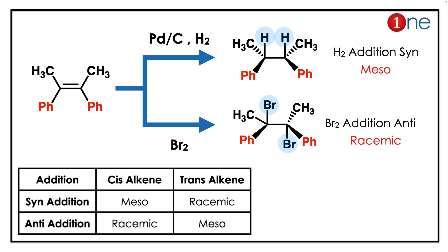Palladium-hydrogen addition is syn-addition; bromine addition is anti-addition. So according to our table, cis-stilbene with syn-addition (Pd/H₂) leads to meso, and cis-stilbene with bromine (anti-addition) leads to racemic. The reactant stereochemistry combined with the reagent's addition property determines the product.